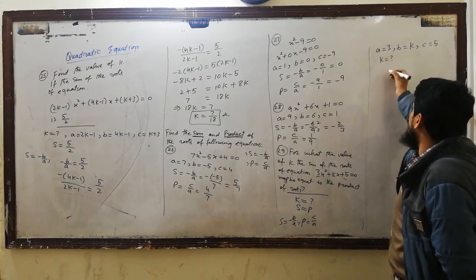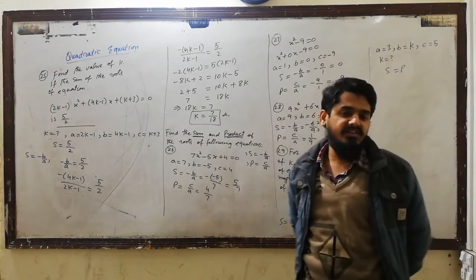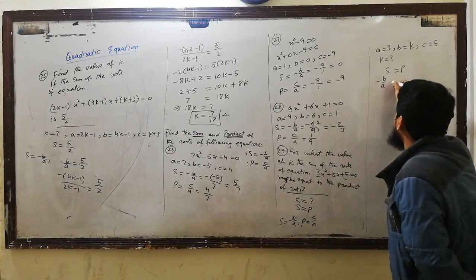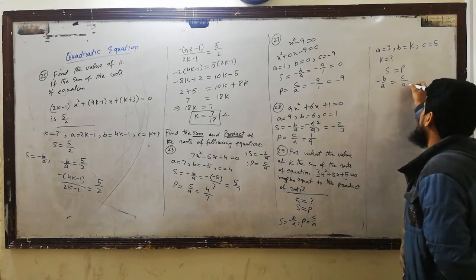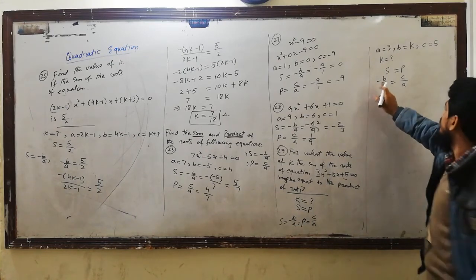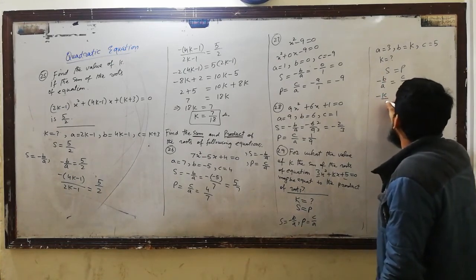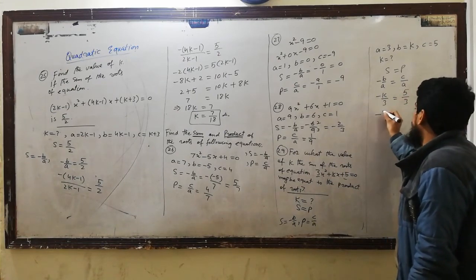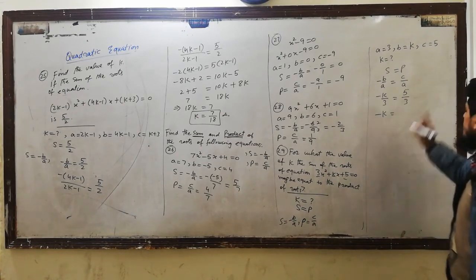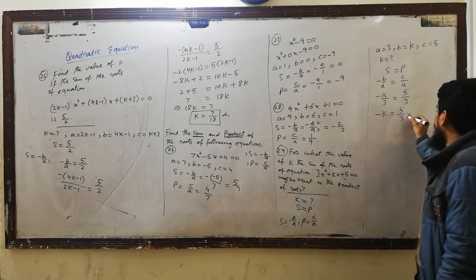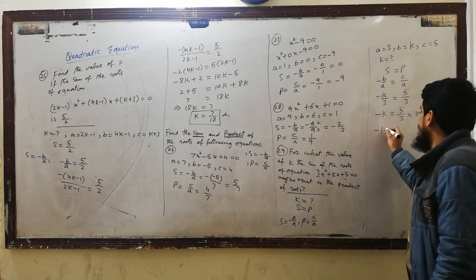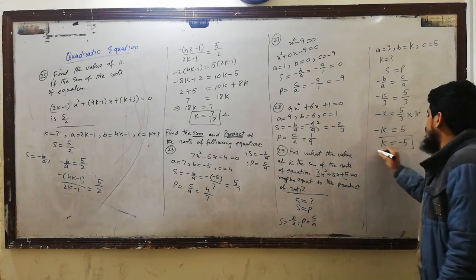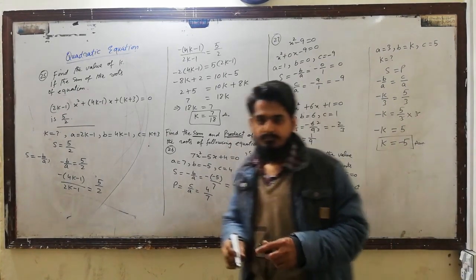Sum को product के equal करते हैं। Sum का formula minus B divided by A and product का C divided by A. Values put करेंगे: minus K divided by 3 equal to 5 divided by 3. 3 cancel हो जाएगा, so minus K is equal to 5, therefore K is equal to minus 5.